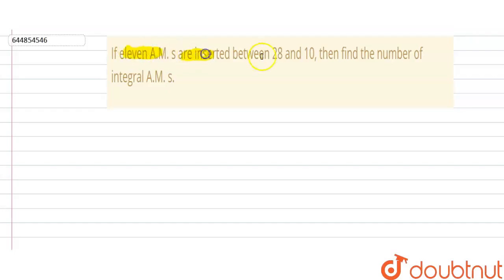11 AMs are inserted between 28 and 10, then find the number of integral AM. AM means arithmetic means. Now let's start the question.